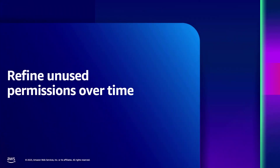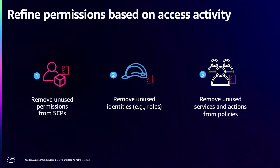Moving on to step three of the least privilege journey — refining permissions over time. IAM offers a few capabilities based on last access data found in CloudTrail. If you want to start broad at your guardrails level, for example your Service Control Policies, you can look at last used information for all services granted through your SCPs to identify services not really being used, and easily remove or deny those in your SCPs to retain access to just the services your teams require.